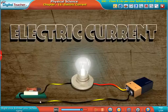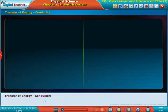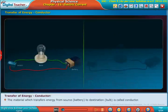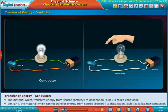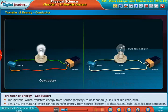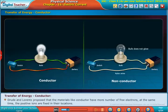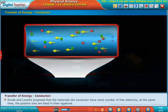Welcome to the chapter. Let us know the transfer of energy in a conductor. The material which transfers energy from source (battery) to destination (bulb) is called conductor. Similarly, the material which cannot transfer energy from source to destination is called non-conductor. Drood and Lorange proposed that materials like conductors...